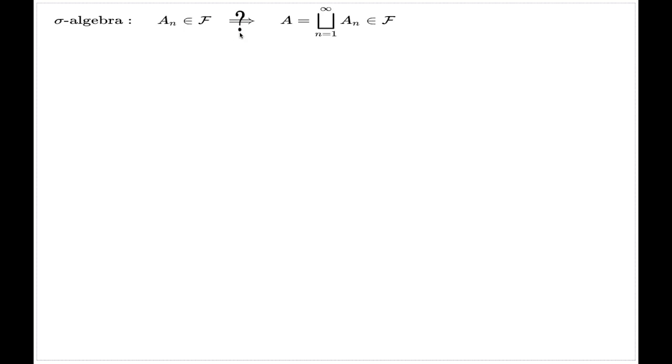Correction. The union, of course, should not necessarily be disjoint. It's just a typo on the slide. Nowhere in the proof which will follow we will use the fact that the union is disjoint.